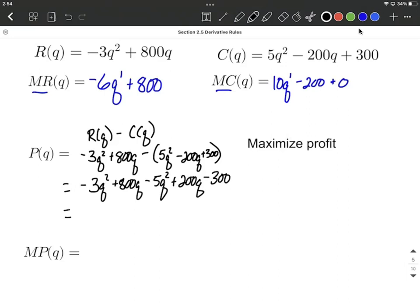Combine a few like terms, and we're going to get negative 8q squared, because we had q squared terms. We have q terms, q to the first terms. As we combine those together, we're going to get positive 1000q, and then our constant can come along minus 300.